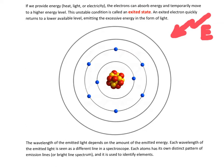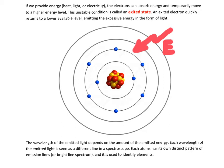If we provide energy in the form of heat, light, or electric current, the electrons can absorb this energy and move to higher energy levels — to orbitals with a higher energy level. Remember that the energy of an electron corresponds to the energy level or orbital it occupies. Here, one electron absorbs energy and jumps up to a higher level, and another electron also absorbs some energy and moves to a higher level.